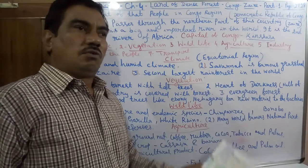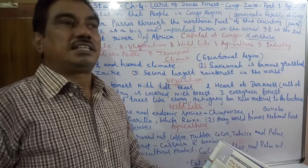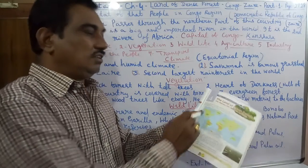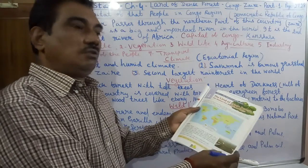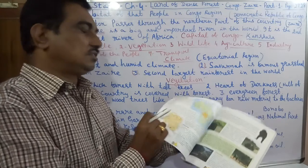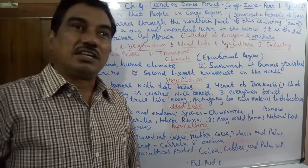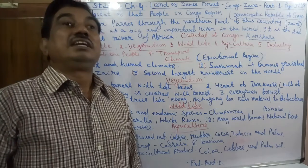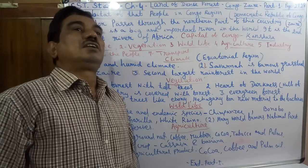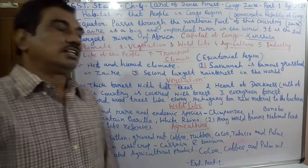There are seven points to cover. First is climate, then vegetation, wildlife, agriculture, industry, life of the people, and lastly transport.